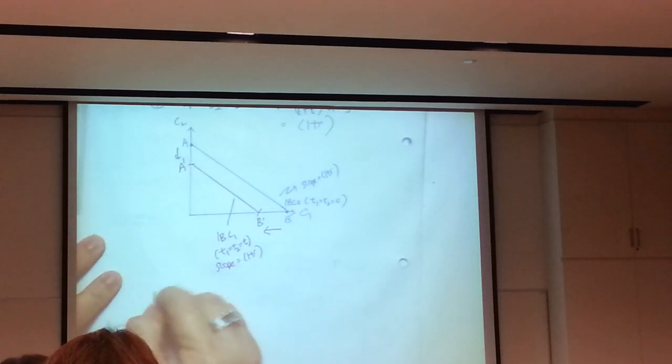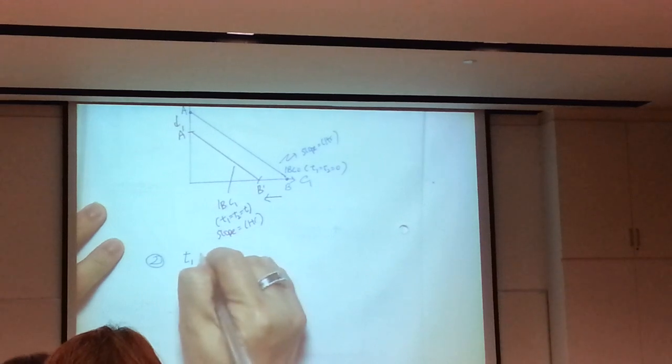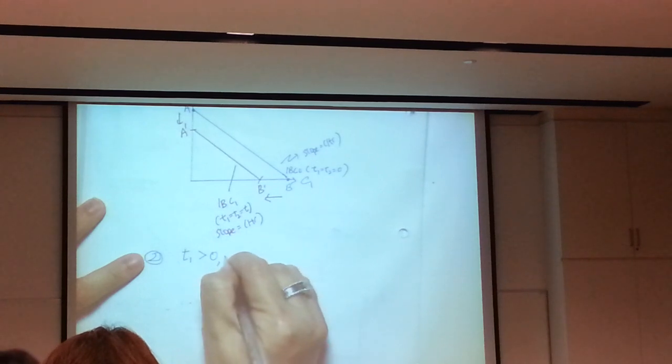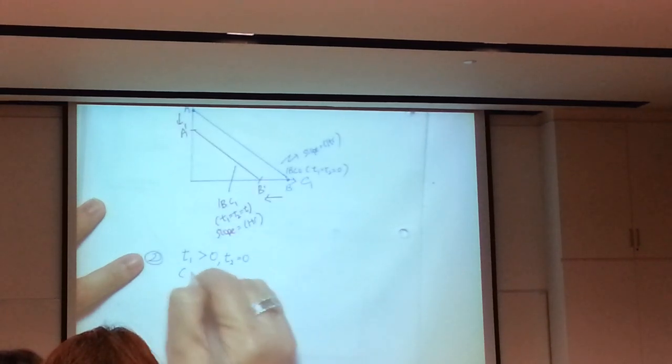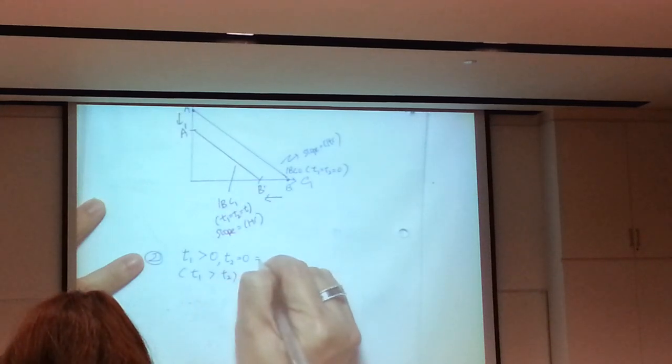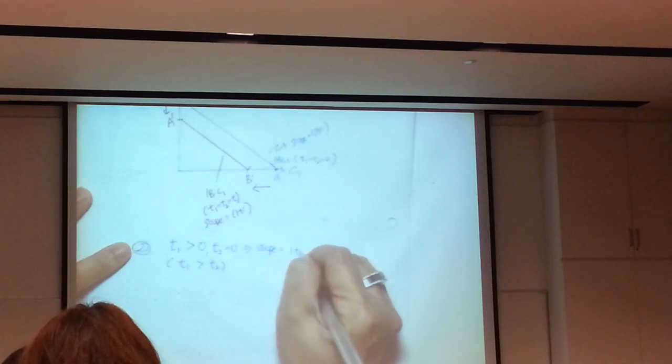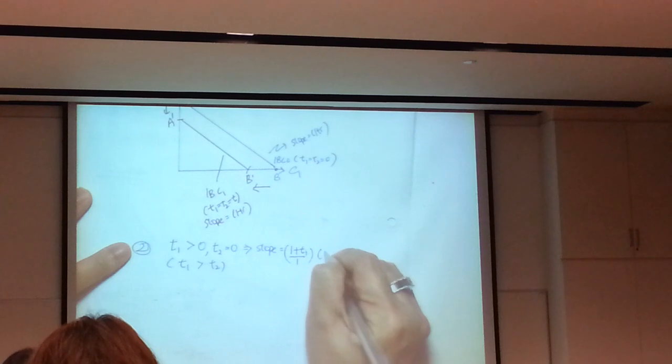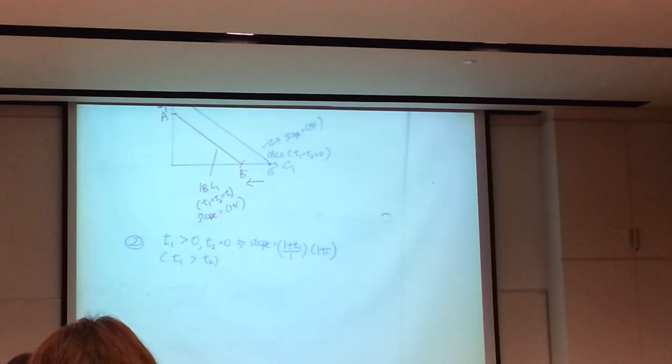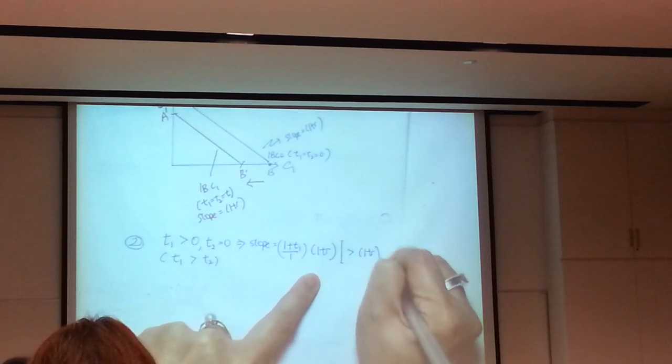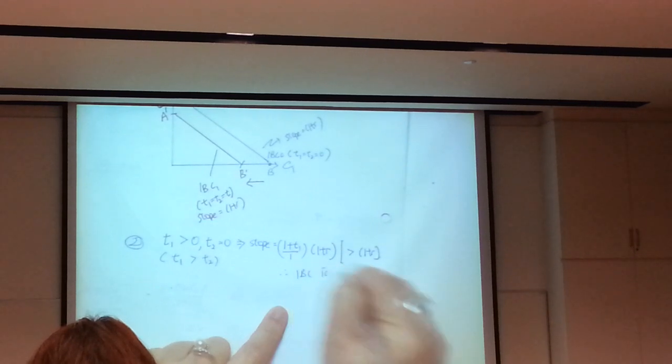So we put down again, slope of standard IBC was 1 plus R. Now with taxes it's 1 plus T1, 1 plus T2, times 1 plus R. So now the taxes affect the slope. But how? How does it affect? So we consider 3 cases. Case 1. See carefully, if T1 is exactly equal to T2, the slope would be just 1 plus T over 1 plus T times 1 plus R, which is 1 plus R.